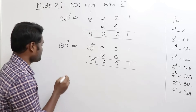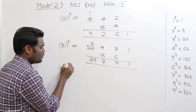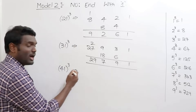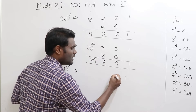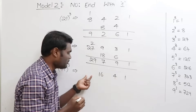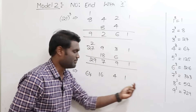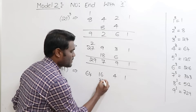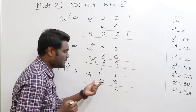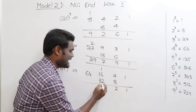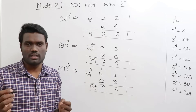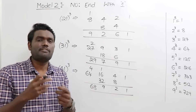Let's try 41 cubed — again, a Model 2 number ending with one. Start from the right: digits 1 and 4. Square of 4 is 16; cube of 4 is 64. Leave first and last, double the middle: double 16 is 32, double 4 is 8. Adding right to left: 1; 4 plus 8 is 12 — write 2, carry 1; 32 plus 16 is 48, plus 1 carry is 49 — write 9, carry 4; 64 plus 4 is 68. So 41 cubed equals 68921. You can similarly practice 51 and 61 cubed.